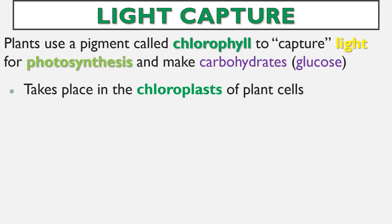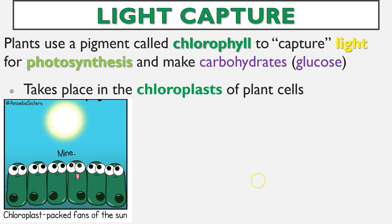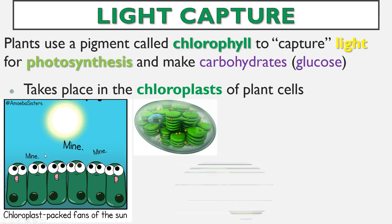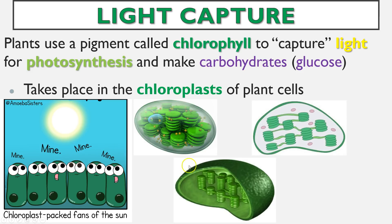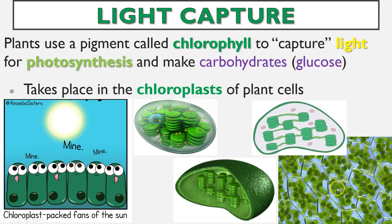This is going to take place in the chloroplasts of plant cells. We have these chloroplasts filled with chlorophyll, gobbling up the sun and using that energy to make the glucose. Here you can see some computer versions of what a chloroplast actually looks like, and here you can see an actual plant cell packed full of chlorophyll and chloroplasts.